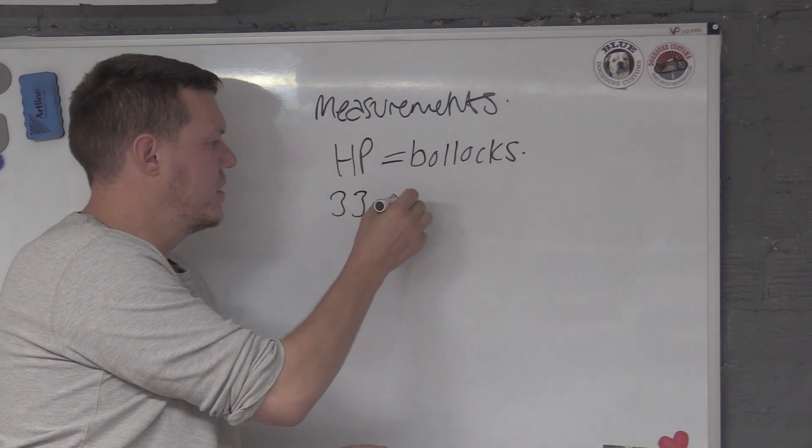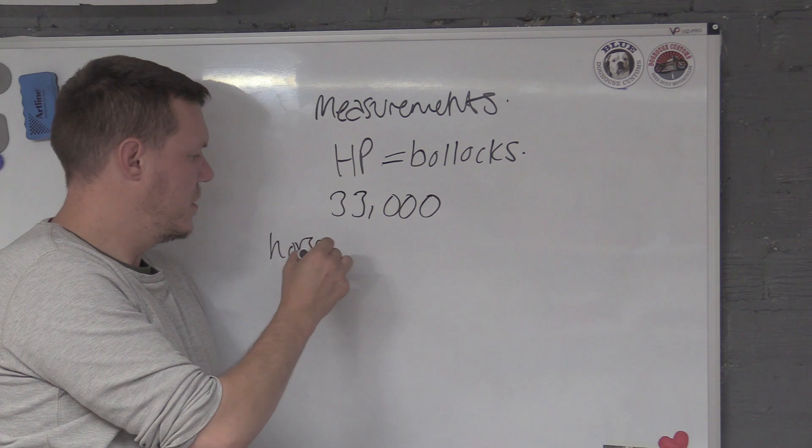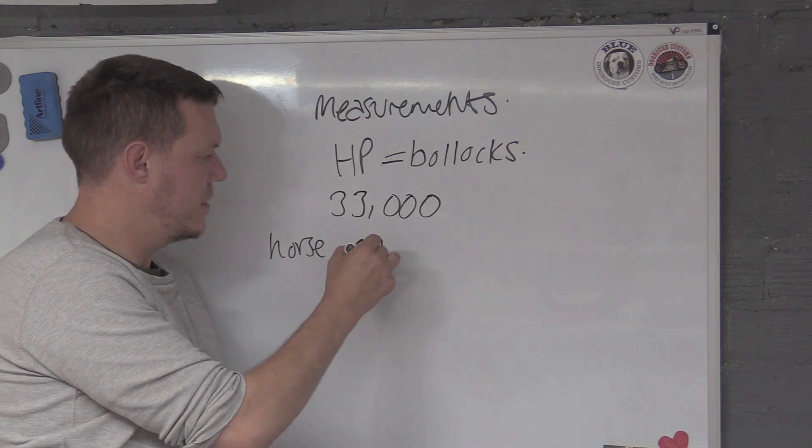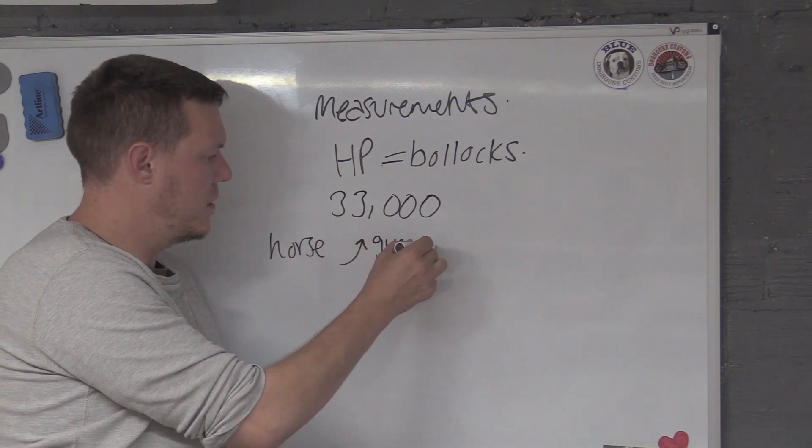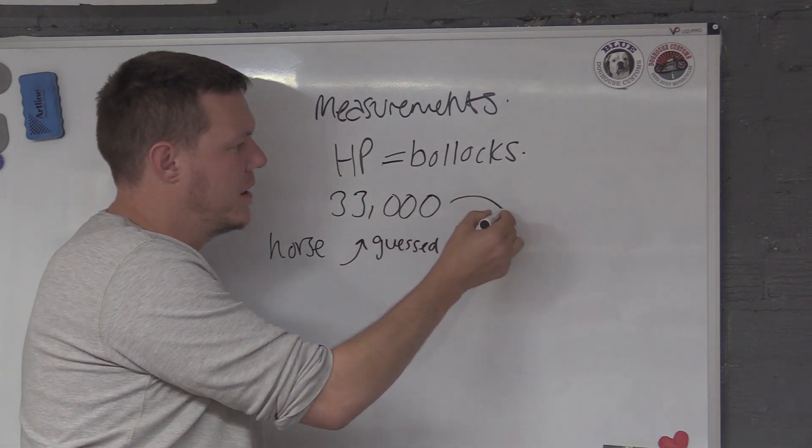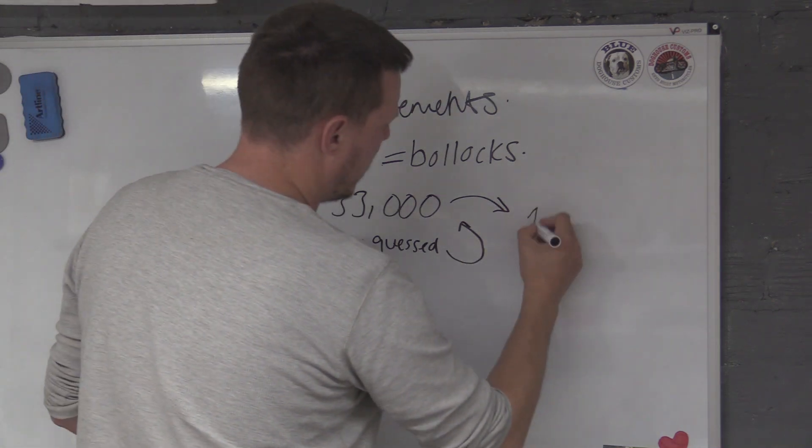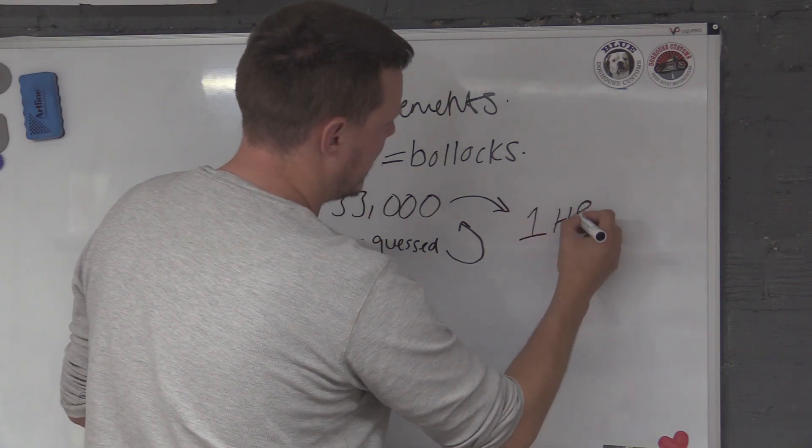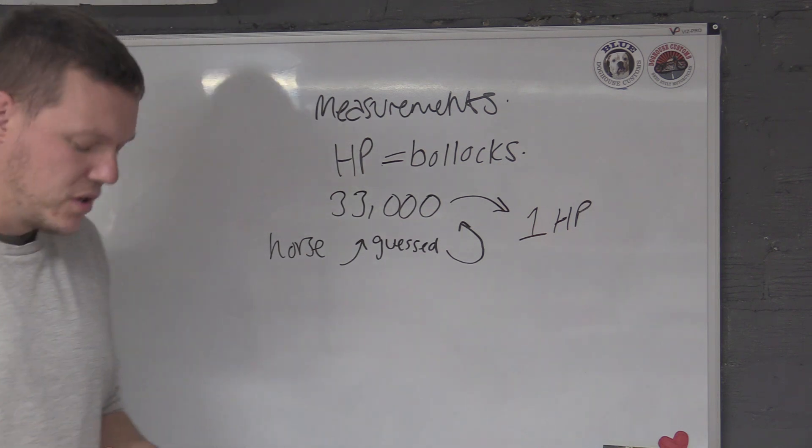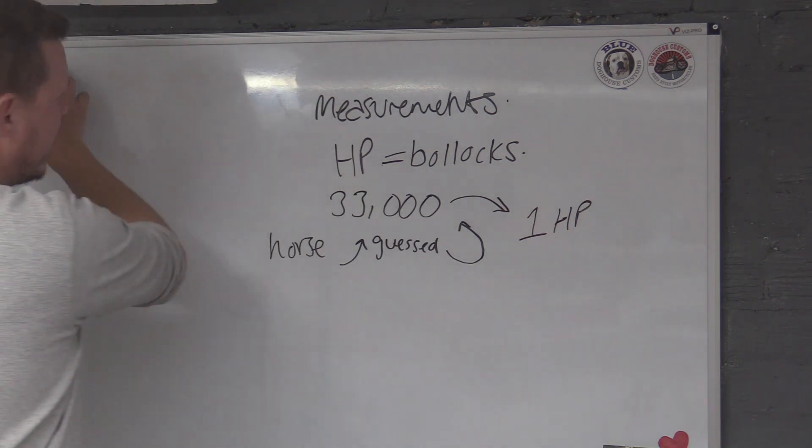So he's taken a horse, he's guessed, and then he's rounded it up to this number and then stuck that into what one horsepower is, right? So what?